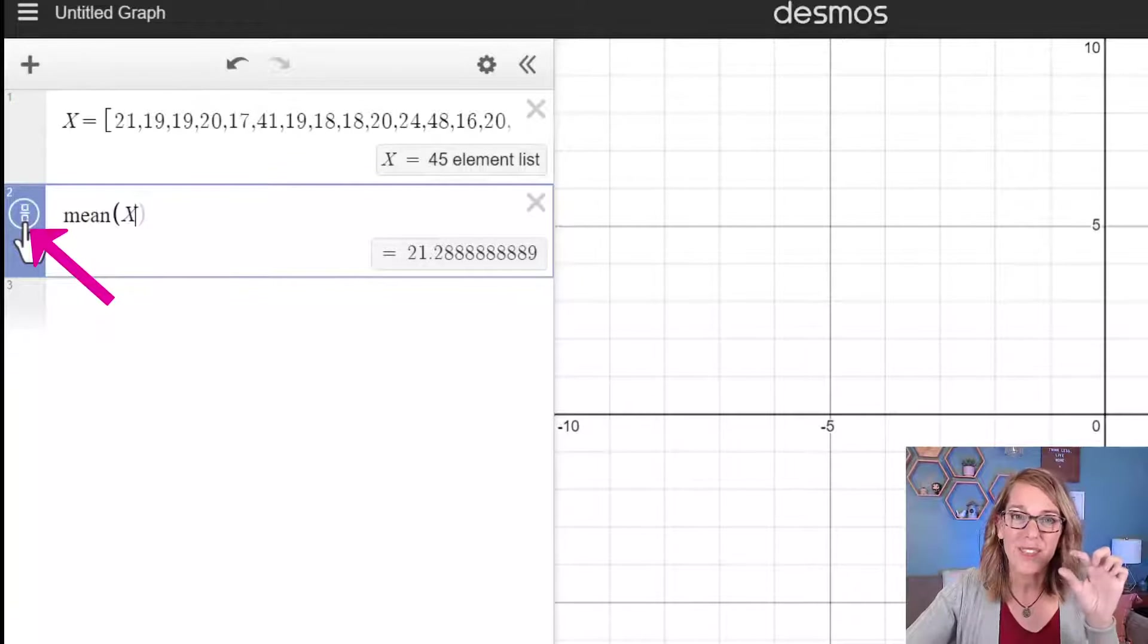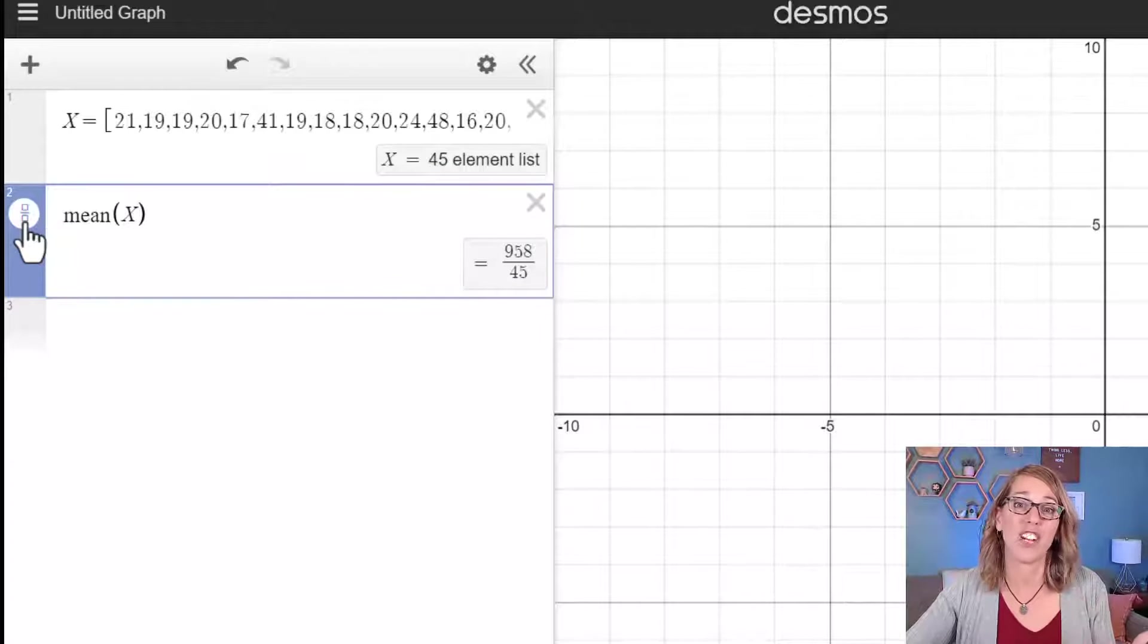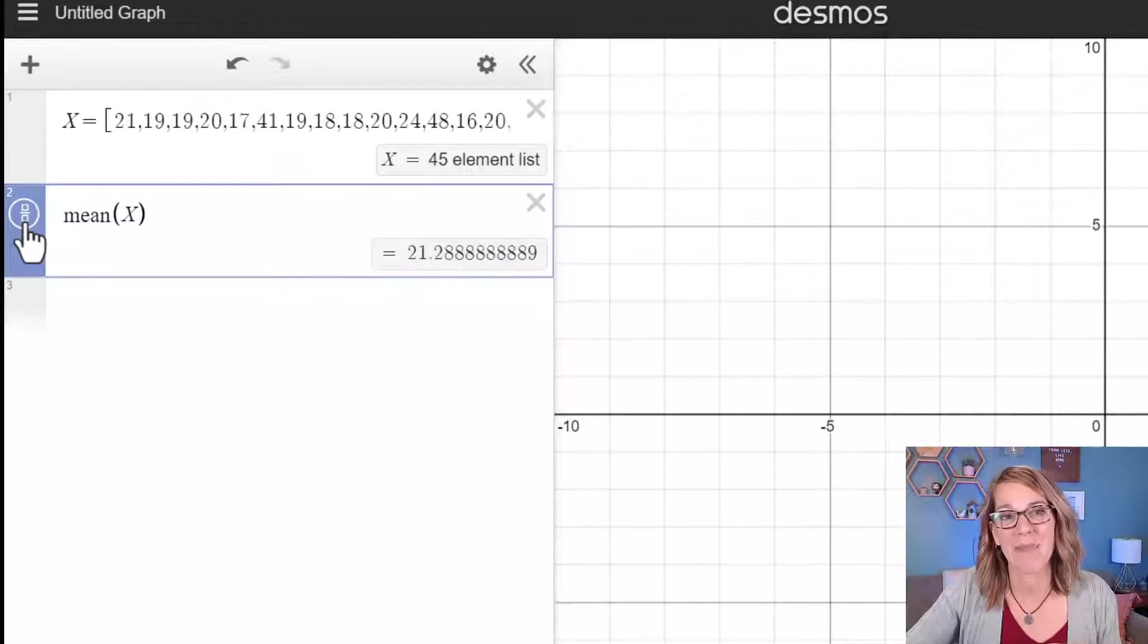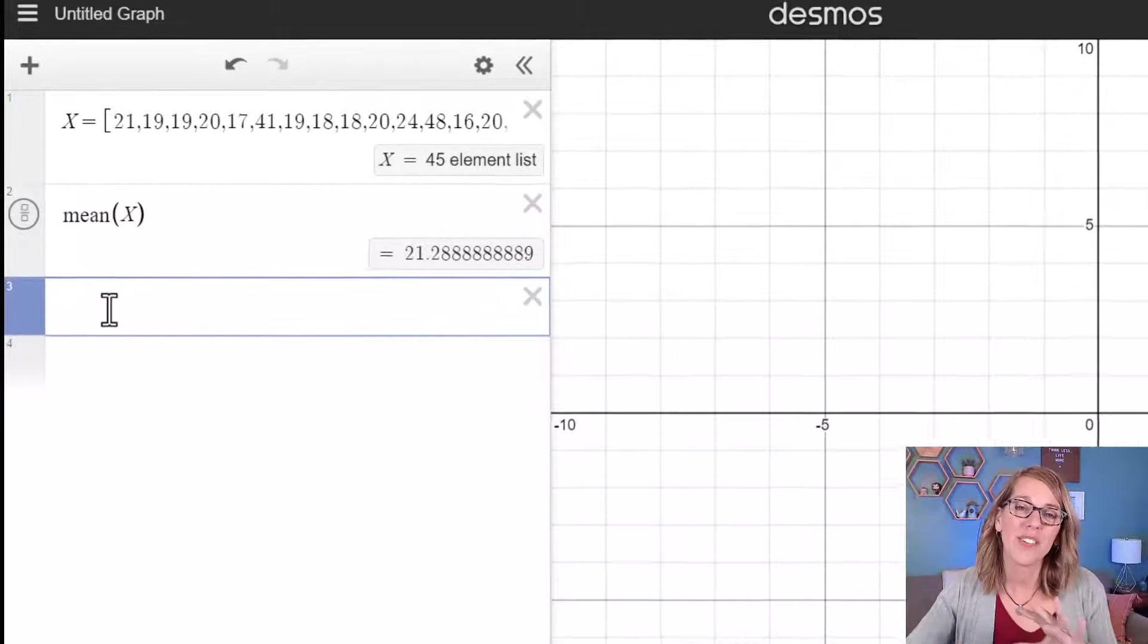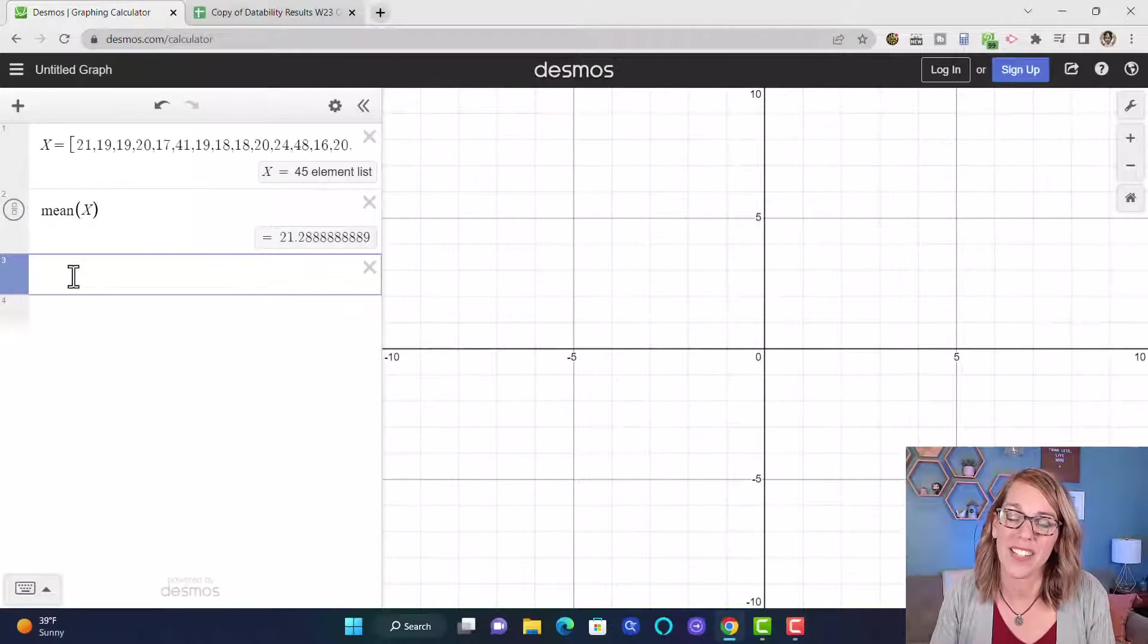Notice this little fraction symbol popped up. If I click on the fraction symbol it will change it into a fraction. Clicking it again back to a decimal. Now you don't need to know the names of all the statistical measures that Desmos has.